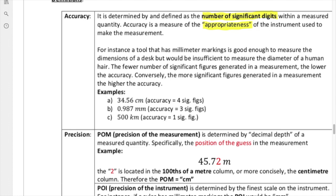Looking at 500 kilometers, those two zeros are just placeholders, so that five is just our guess. That means it's one sig fig — a poor tool selection. Let's consider where this column exists. If my guess is in the 500s, that's the hundreds of kilometers column. To the left would be the thousands of kilometers column. Thousands of kilometers is actually a megameter — just like a thousand kilobytes is a megabyte, a thousand kilometers is a megameter. So this one is our least accurate.